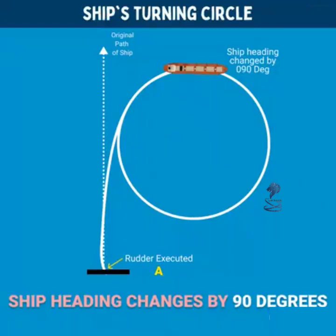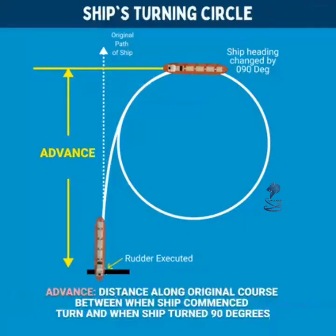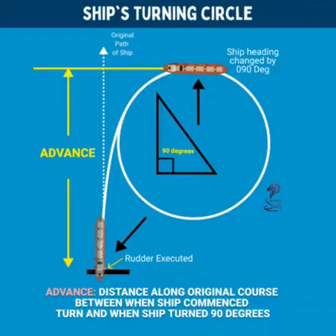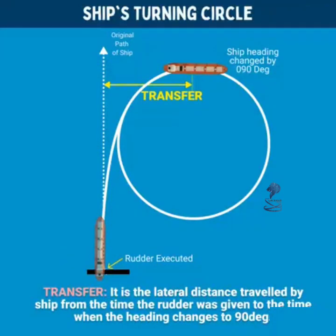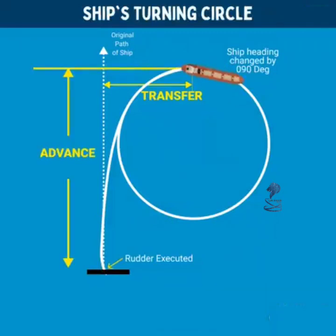two parameters are checked: Advance and Transfer. Advance is the distance travelled along the original course between when the ship commences its turn to when the heading changes by 90 degrees. Transfer is the lateral distance travelled by the ship from the time the rudder was given to the time when the heading changes to 90 degrees.